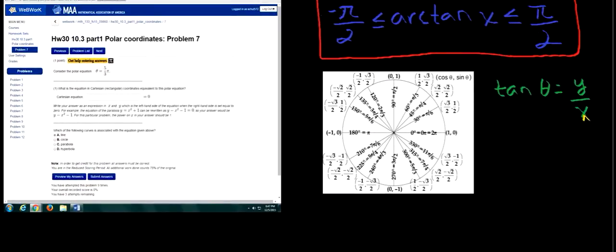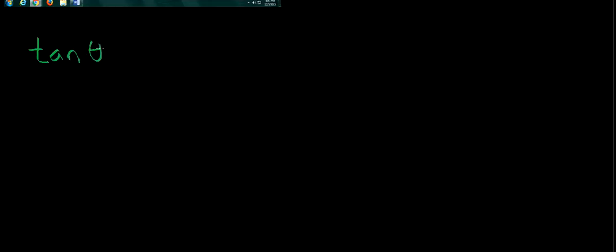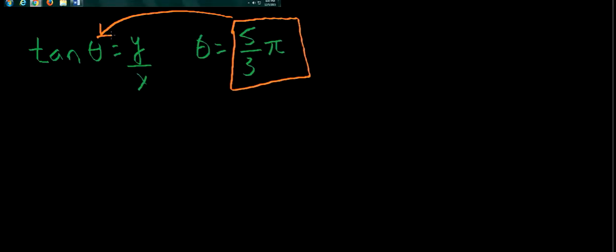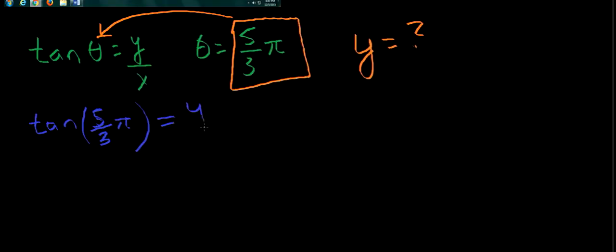We know the angle five pi over three is shown on the unit circle, and that angle gives us a line. So we have tangent theta equals y over x, and we're given theta equals five-thirds pi. What we'll do is plug in five-thirds pi for theta and solve to get us to the form y equals whatever we need — that will give us our equation of the line in Cartesian coordinates. So, solving this: tangent of five-thirds pi equals y over x.